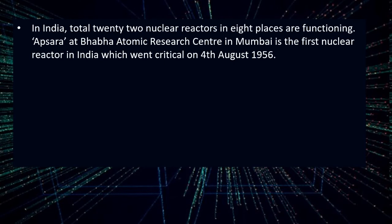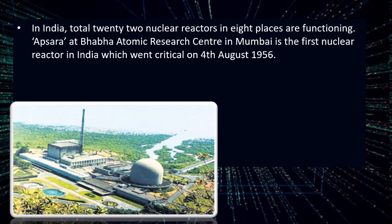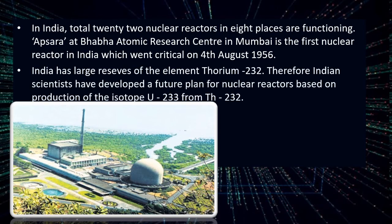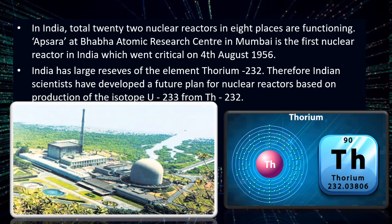There are a total of 22 nuclear reactors in 8 places in India. Apsara at Baba Atomic Research Centre (BARC) in Mumbai is the first nuclear reactor in India, which went critical on 4th August 1956. India has large reserves of Thorium-232, so Indian scientists have developed a future plan for nuclear reactors based on production of isotope Uranium-233 from Thorium-232.